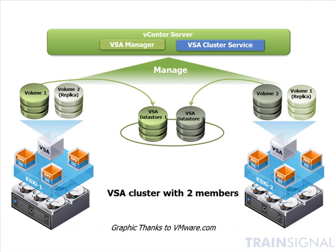A two-node VSA cluster has two physical servers, each running ESXi with applications and virtual machines, plus a special VSA virtual machine accessing the local disk and providing volumes. One VSA on the left has volume one, replicated on ESXi server two; ESXi server two has volume two, replicated on ESXi server one. This is essentially RAID 1 mirroring between the hosts. These are presented as two VSA datastores, managed by the VSA manager and VSA cluster service both running on the vCenter server.